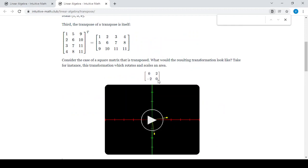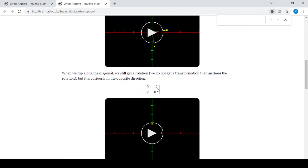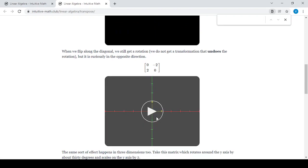The row here is zero two and that has become a column here. The second row is minus two and zero and that has become a column here. Both are transpose of each other, and you can see the effect of that.